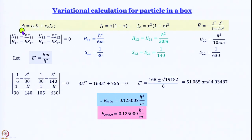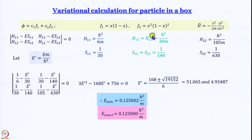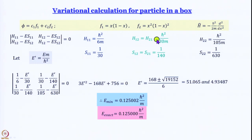In the previous module, we represented the wave function as c₁f₁ + c₂f₂, where f₁ = x(1−x) and f₂ = x²(1−x)². These are not the functions obtained by solving the Schrödinger equation exactly, and whether they are orthonormal is left for you to determine.